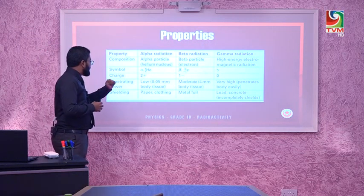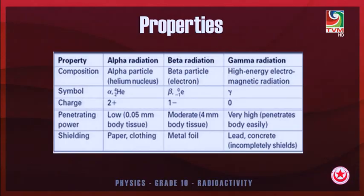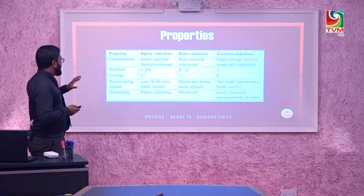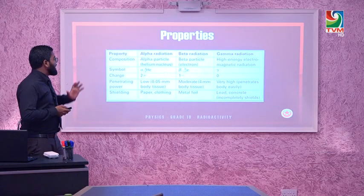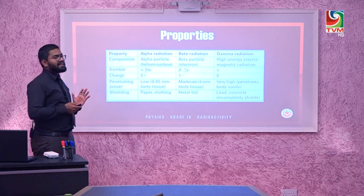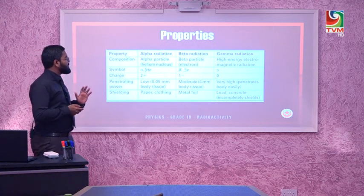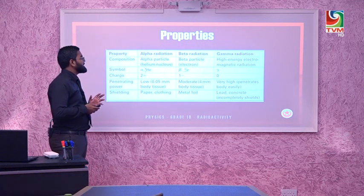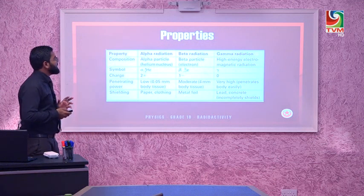Regarding shielding: alpha radiation can be stopped by cloth or paper; beta radiation can be stopped by metal foil, around 3 millimeters of aluminum; and gamma radiation can be stopped by lead or concrete, though it is not completely shielded since it is electromagnetic radiation. For ionizing power: alpha is highest, gamma is least, and beta has moderate ionizing power.